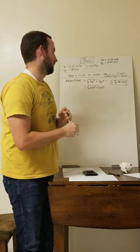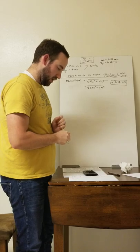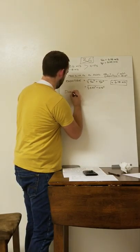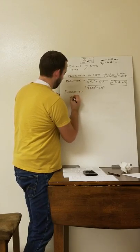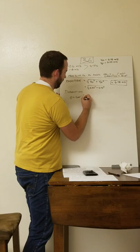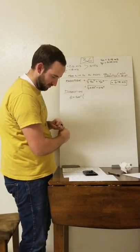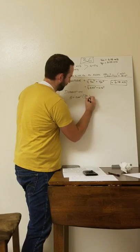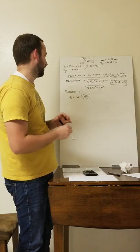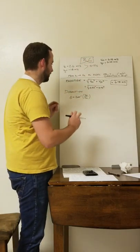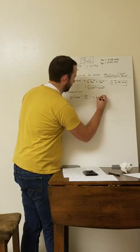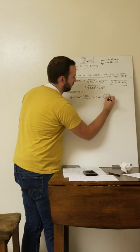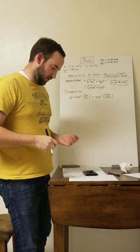That's the magnitude of the velocity vector at time equals 20 seconds. For direction, theta equals the inverse tangent of vy2 over vx2 — I always double-check that y goes on top. Plugging in: inverse tangent of 0.52 over 6.46 gives theta equals 4.6 degrees.